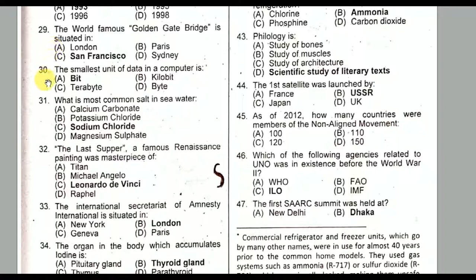Question number thirty: The smallest unit of data in computer science is a bit. Option A is the correct option. Question number thirty-one: